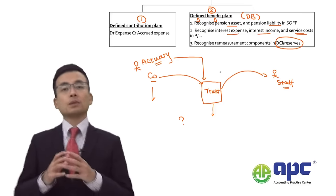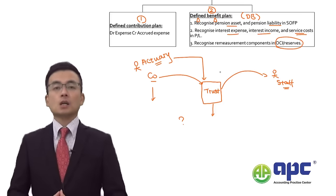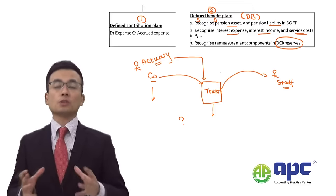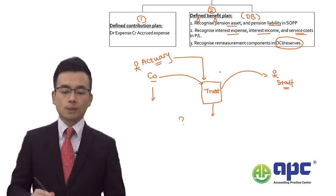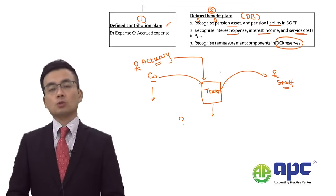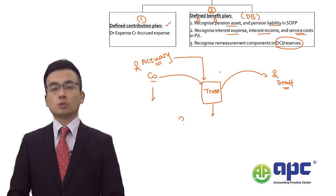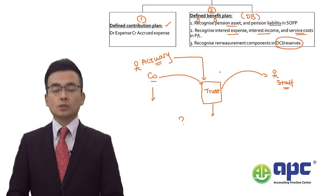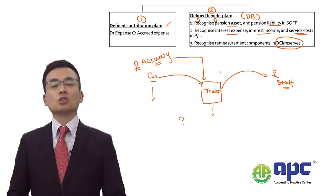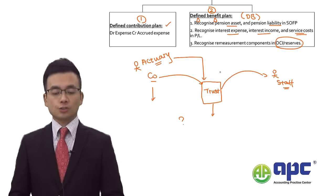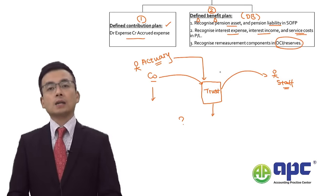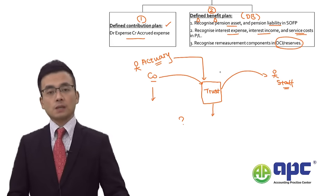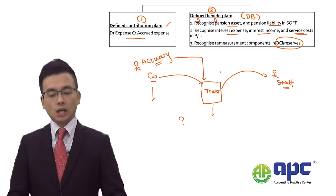If the company does not promise the staff a specific retirement amount, it falls into the defined contribution plan category. When transferring money to the trust company under defined contribution, we simply recognize the expense and credit the accrued expense liability each year.